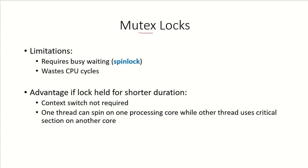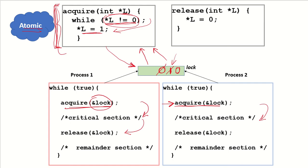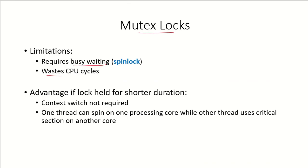The limitation of mutex locks is that it requires busy waiting by one process. If process P1 has acquired the lock, process P2 will keep checking the lock variable and keep trying to acquire it, continuing to spin in the while loop. This wastes CPU cycles, and this busy waiting is also referred to as a spin lock.